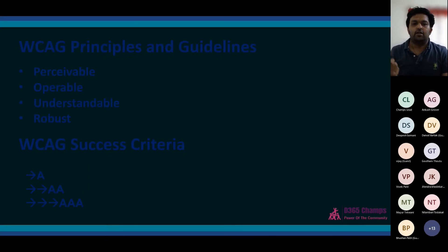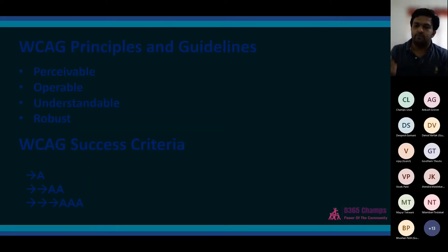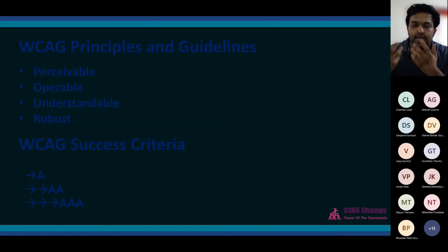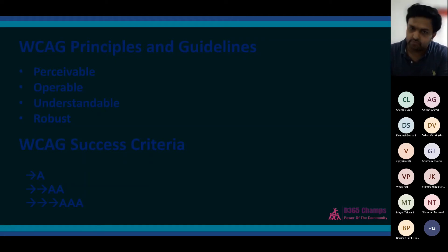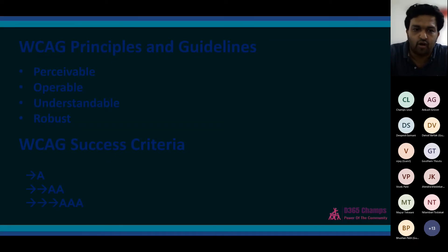The last principle is Robust — the content should be interpretable by all user agents, whether browser, mobile, tablet, or screen reader. A simple example: some websites use a div instead of a button element, so a screen reader may not understand that there's a clickable operation available. Try to use standard controls everywhere. There might be some situations requiring an alternate approach, but try your best to use standard controls. The WCAG success criteria ratings are A (least accessible), AA (double A), and AAA (triple A — most accessible).